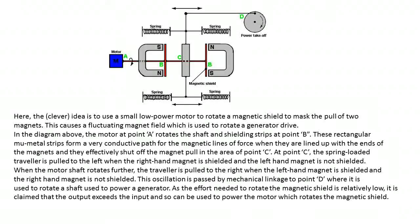In the diagram above, the motor at point A rotates the shaft and shielding strips at point B. These rectangular mu-metal strips form a very conductive path for the magnetic lines of force when they are lined up with the ends of the magnets and they effectively shut off the magnet pull in the area of point C.